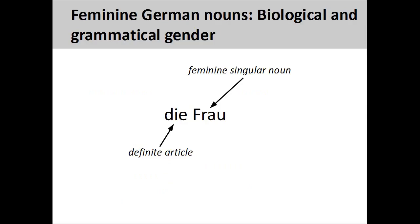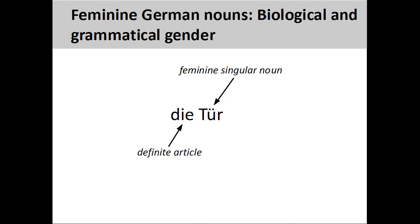Here, the biological gender of the noun 'Frau,' meaning woman, agrees with its grammatical gender. The definite article 'die' shows that this is a feminine singular noun. When learning German, it is important to memorize the definite article with the noun. The German noun 'Tür,' meaning door, has a feminine grammatical gender, so its definite article is 'die.' Here, the grammatical gender does not indicate any biological gender of the noun — there is nothing particularly female about a door.